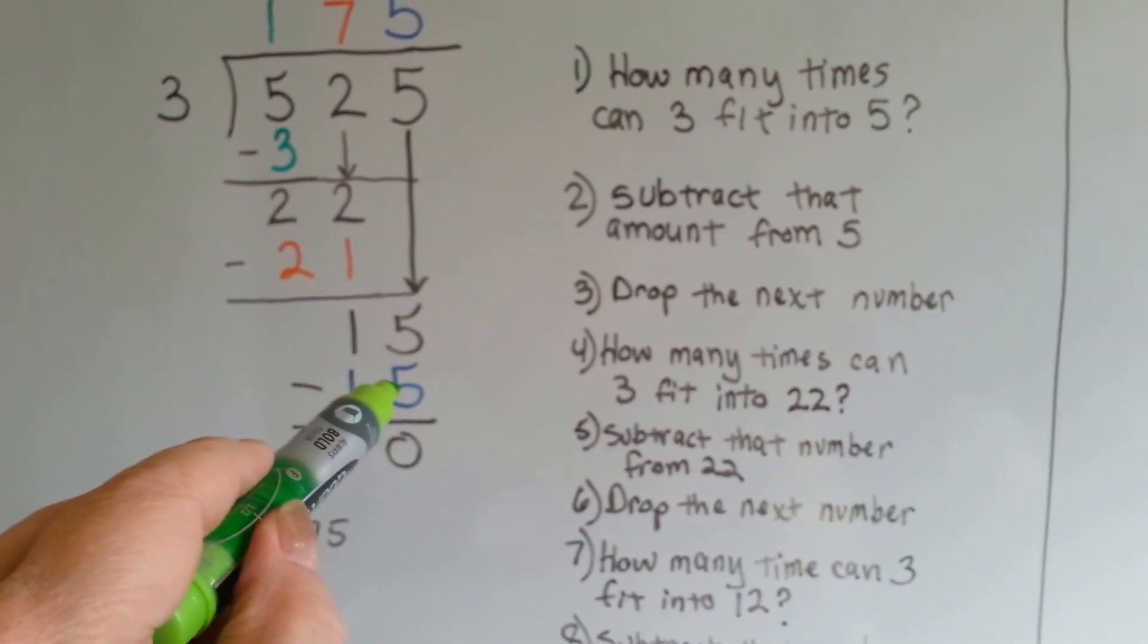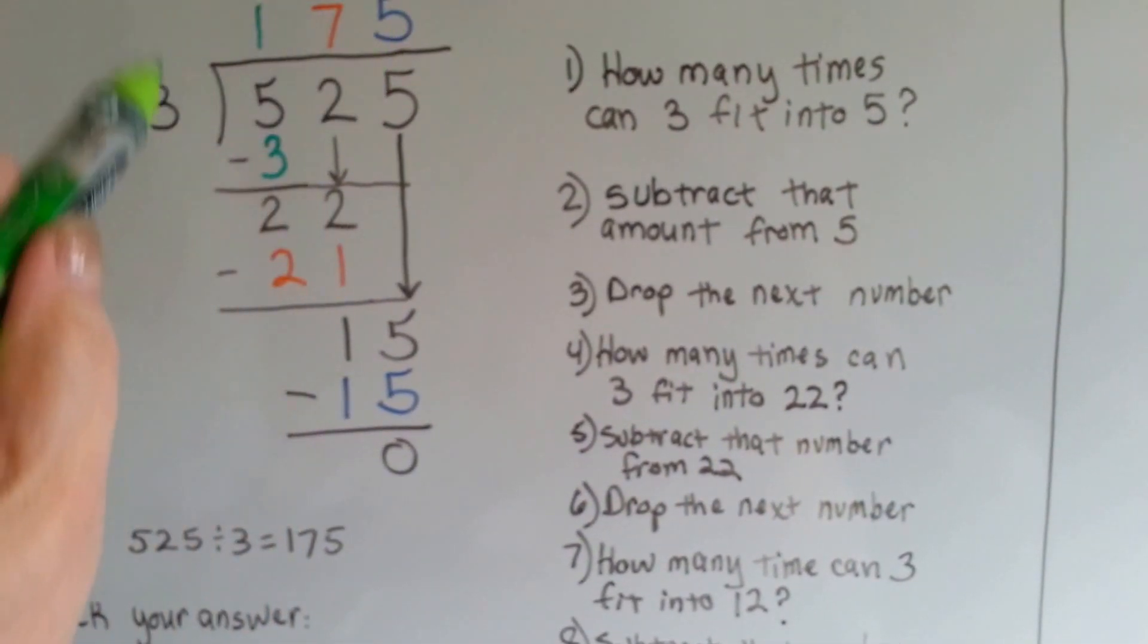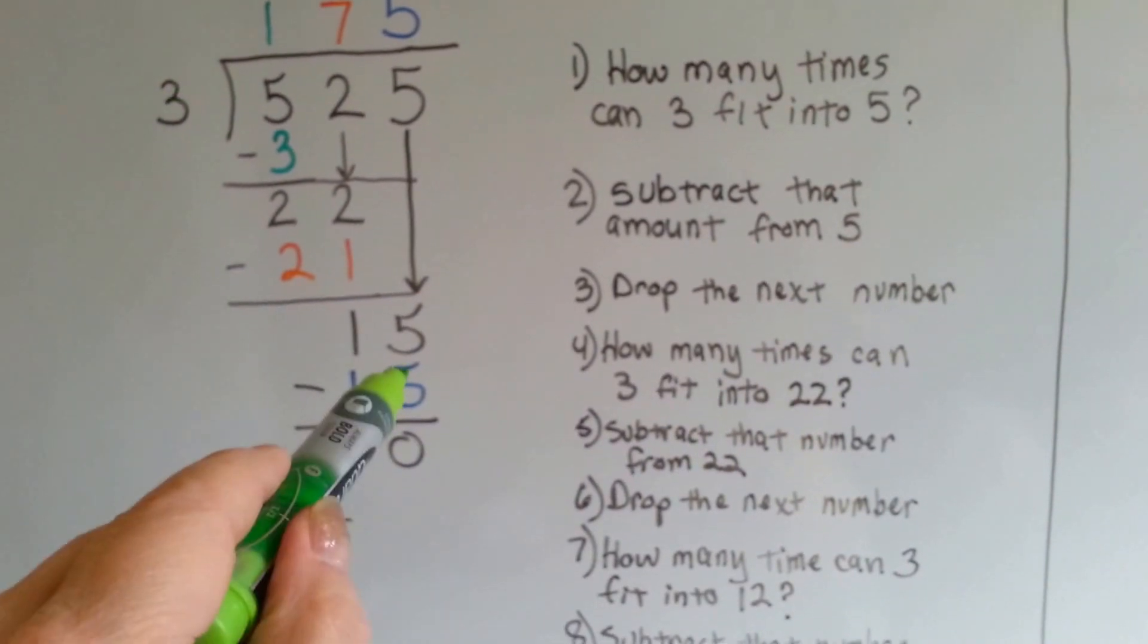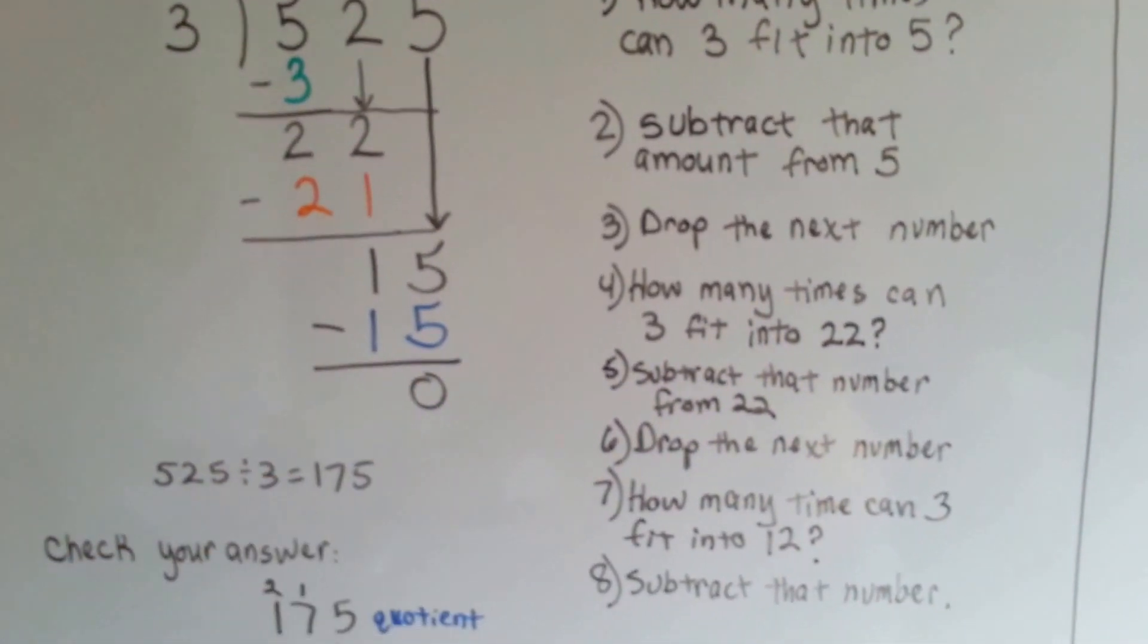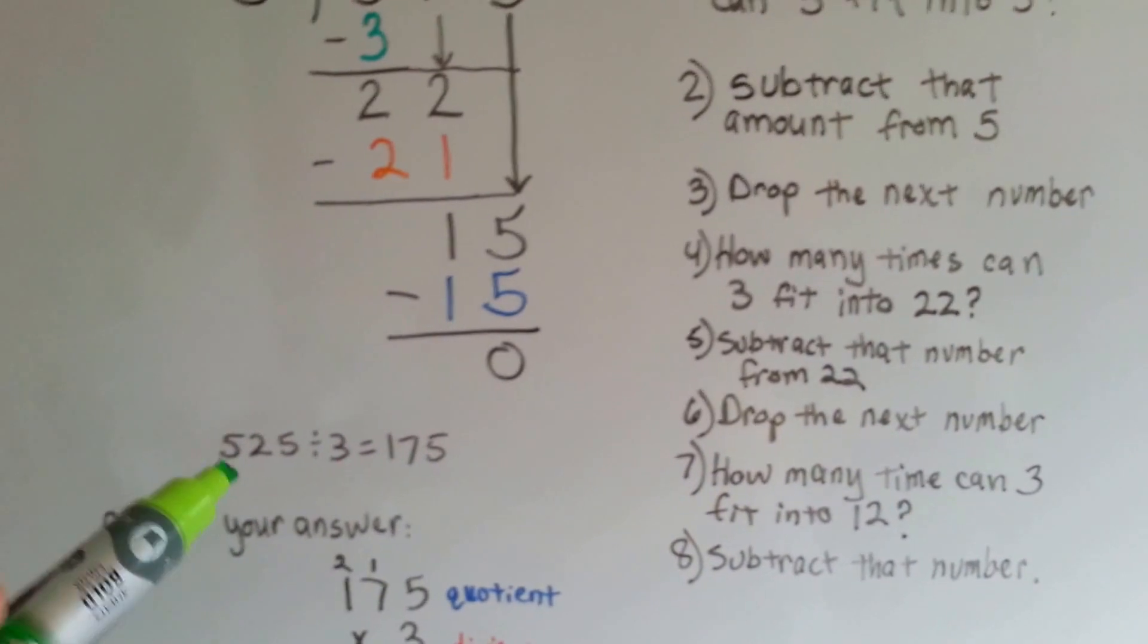3 goes into 15 five times. 3 times 5 is 15, with a remainder of 0. Now to make sure that we did it correctly, our quotient is 175.